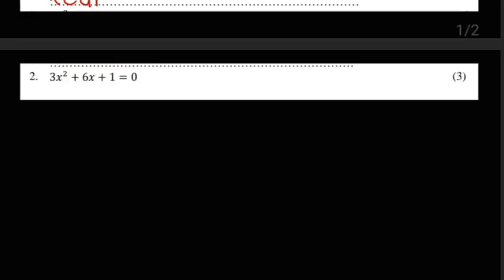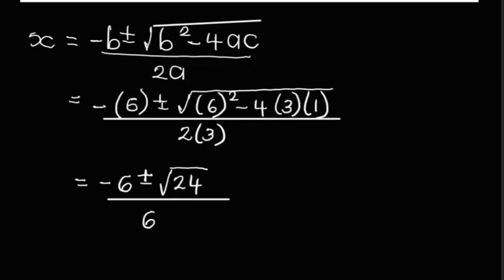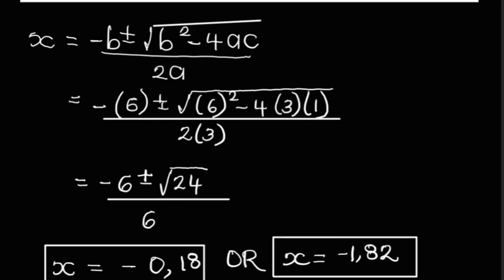We can now go on to equation 2: 3x² + 6x + 1 = 0. We use the quadratic formula, substituting a = 3, b = 6, and c = 1. Substituting and simplifying, we end up with negative 6 plus or minus the square root of 24, all over 6. Working with the plus and then the minus, we get x ≈ -0.18 or x ≈ -1.82. There were no fraction options for these answers — they were long decimals, rounded to two decimal places.